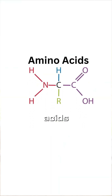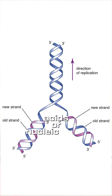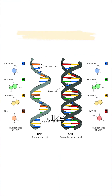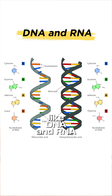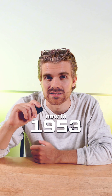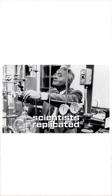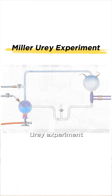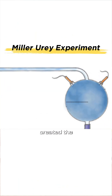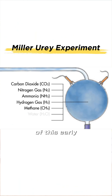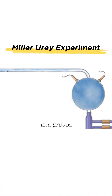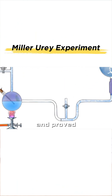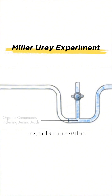Things like amino acids or nucleic acids — the precursors to things like DNA and RNA. In 1953, scientists replicated this: the Miller-Urey experiment created the conditions of this early Earth and proved that these organic molecules can be produced.